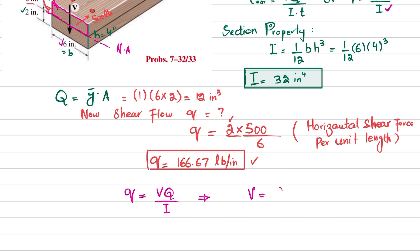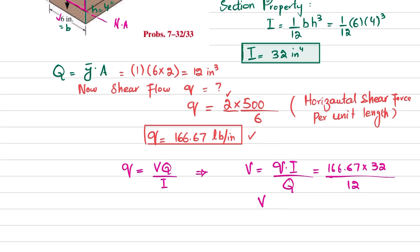From here you will know that V is equal to q times I divided by capital Q. Put the value: small q is 166.67, large I is 32, divided by capital Q is 12. When you solve this, you will get V is equal to 444 pounds.